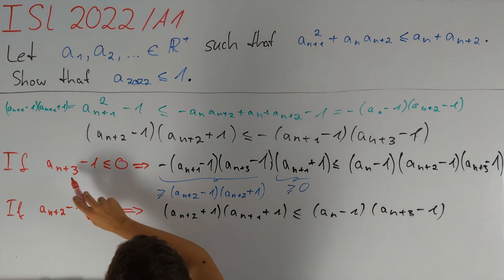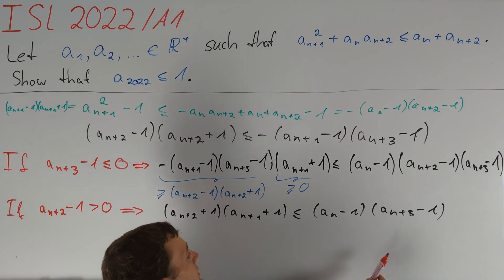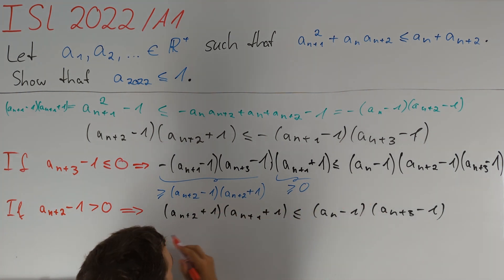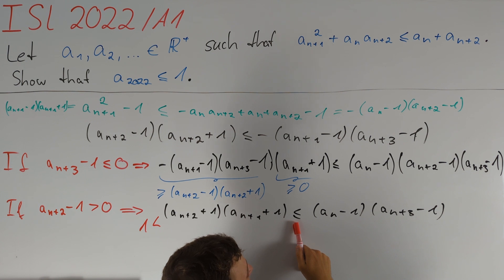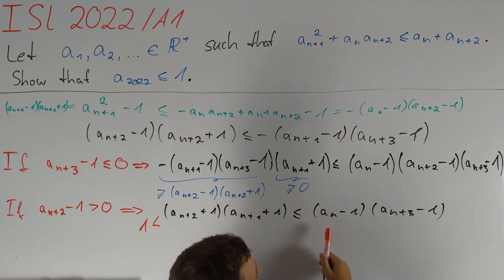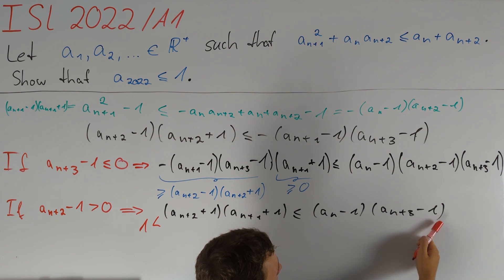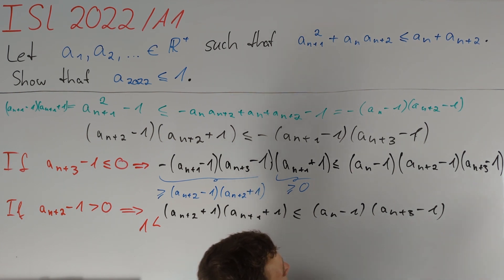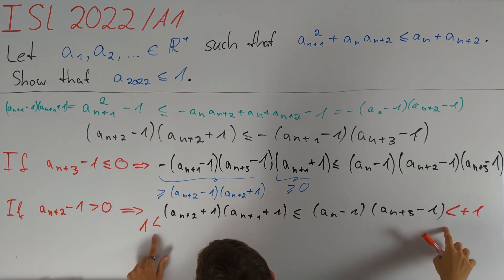Recall that we assumed aₙ₊₃ minus one is less than or equal to zero, so this already seems contradictory. The left side is positive — in fact each factor is greater than one, so it must also be greater than one. Thus the right side must be positive, so aₙ minus one must be negative. Since the aᵢ are positive real numbers, aₙ minus one is greater than negative one and aₙ₊₃ minus one is greater than negative one, so their product is less than one — a contradiction.